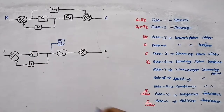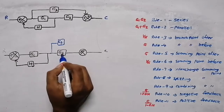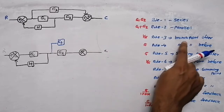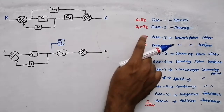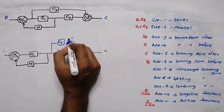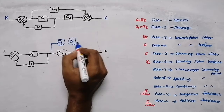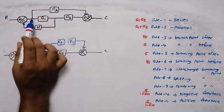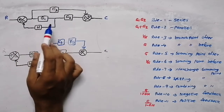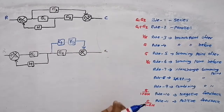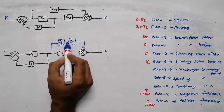I got this as a negative feedback. Now, since I moved this branch point after the block, I need to multiply with 1/G — that is, 1/G1. I discussed this rule in the previous video on block diagram reduction rules. Now as you can see, these two blocks are in series.